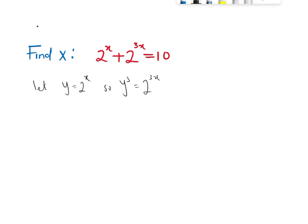Okay, so because from here, we should know that this model is like saying 2 raised to the power x and 3 is outside. So since there is y, we have y raised to the power 3. So our given question is now going to be y plus y raised to the power 3 equals 10.